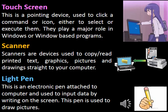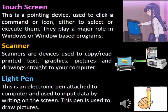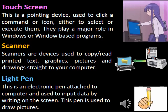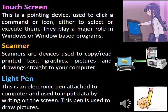The fourth input device is the scanner. Scanners are devices used to copy or read printed text, graphics, pictures and drawings straight to your computer. The fifth input device is the light pen. This is an electronic pen attached to a computer and used to input data by writing on the screen. This pen is also used to draw pictures.